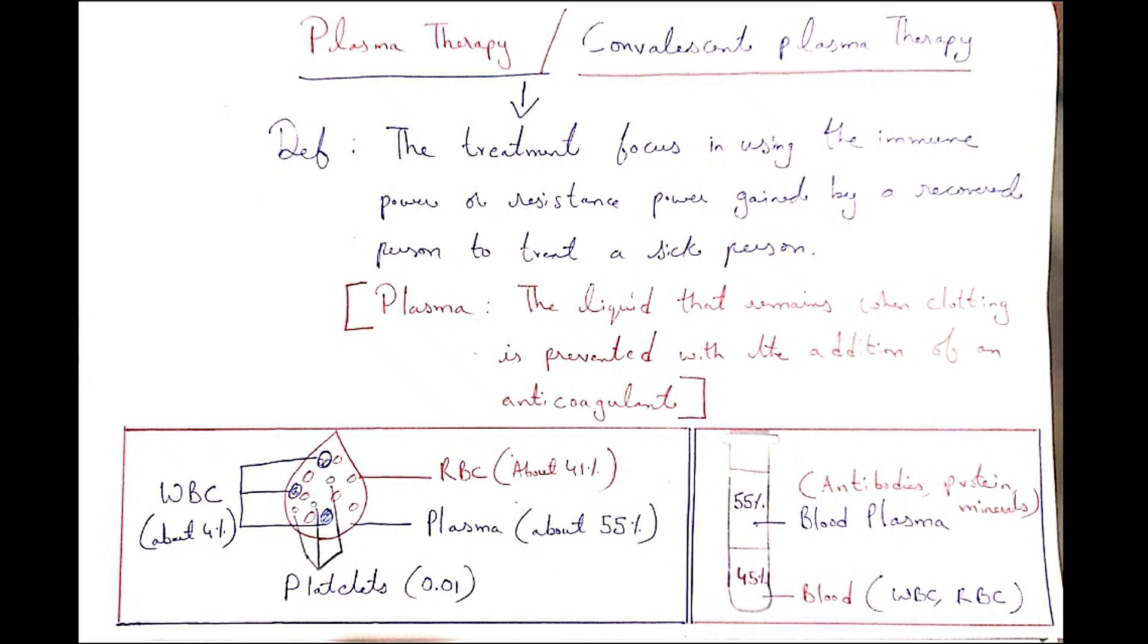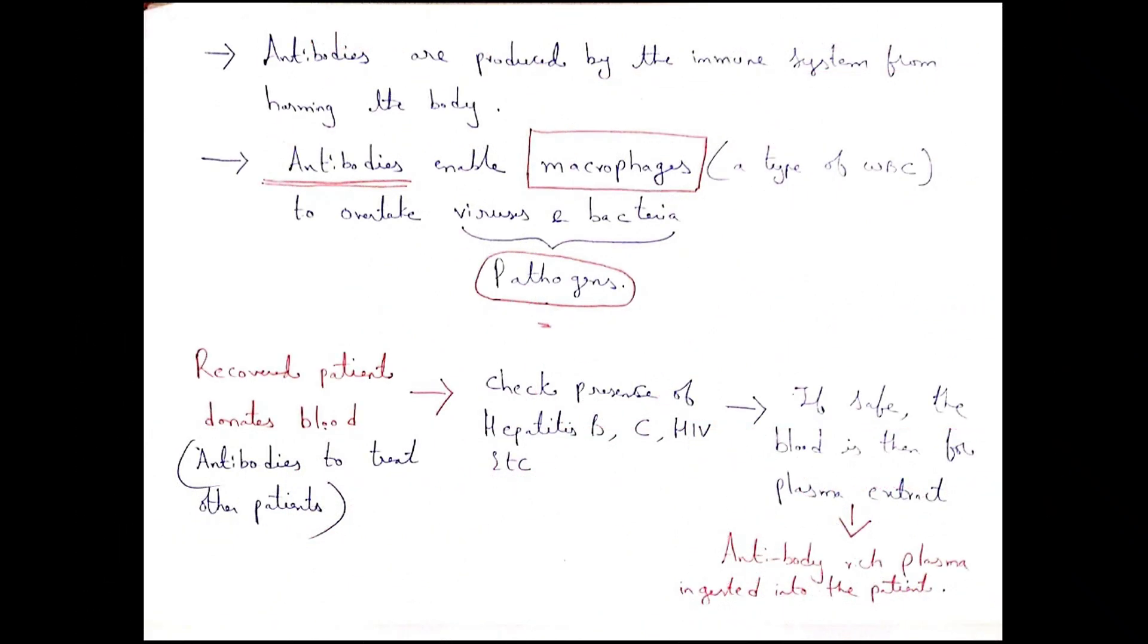So antibodies are produced by the immune system, which help to fight against the pathogens. Once a recovered person's blood is collected, we can find the antibodies.